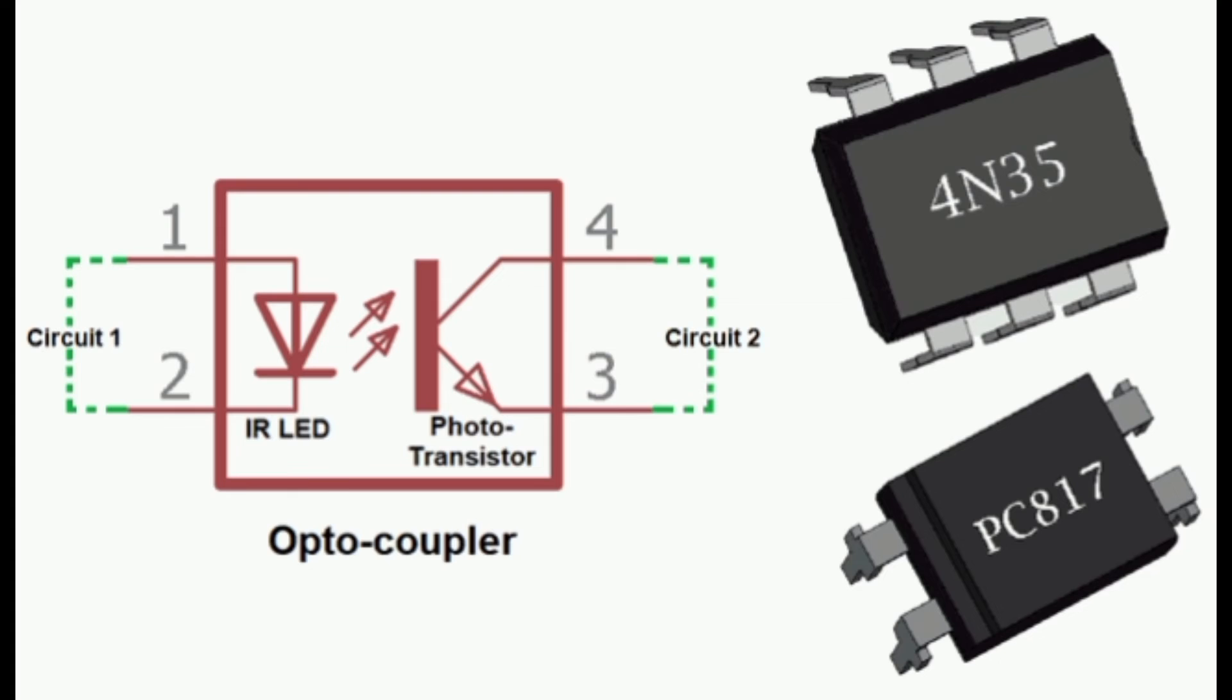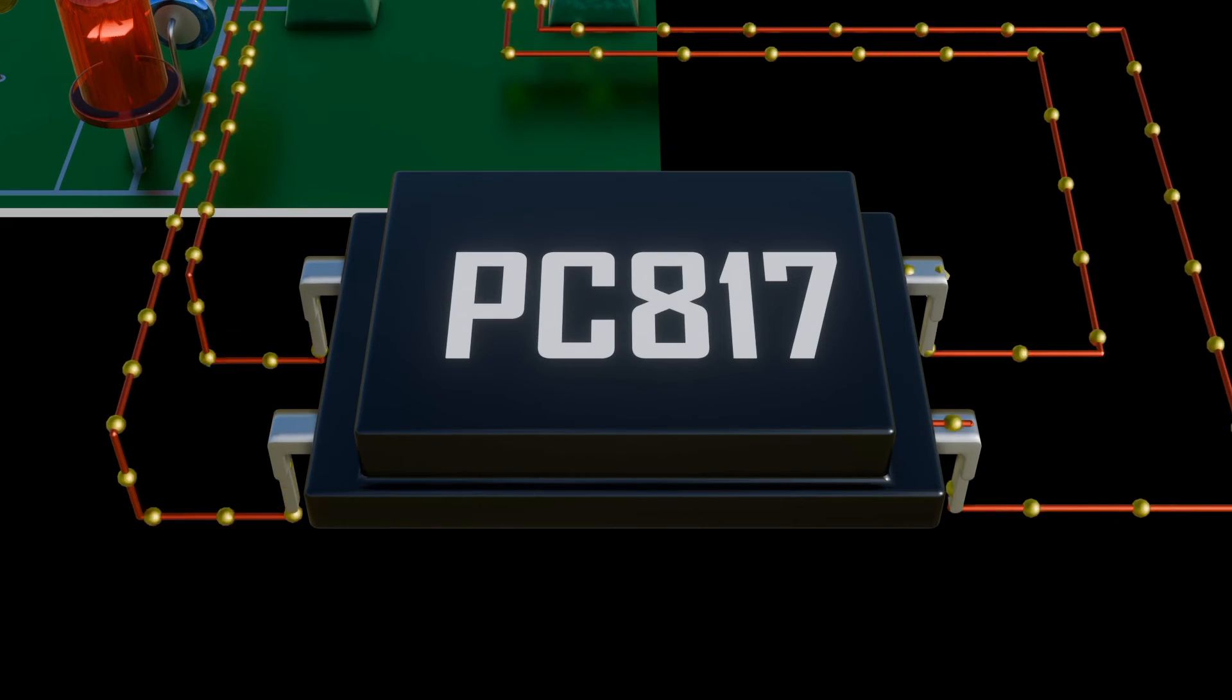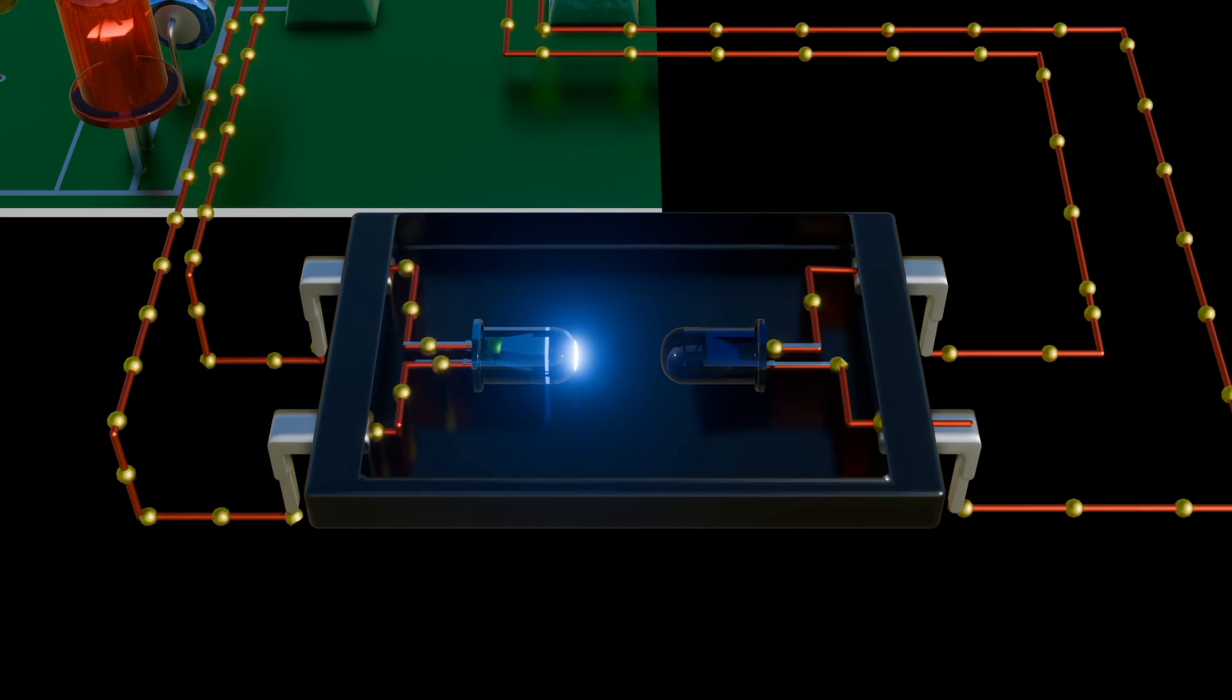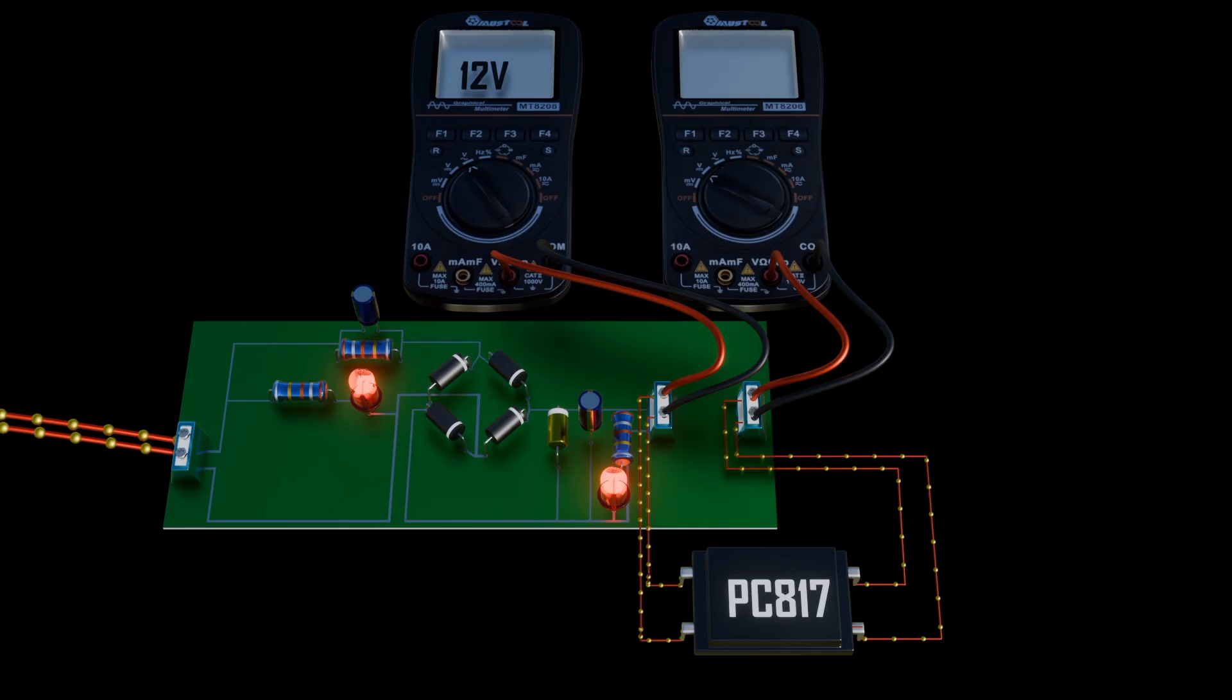Major types of the optocouplers are phototransistor optocouplers, commonly used for general signal isolation and interfacing, photodarlington optocouplers, which provide higher gain and sensitivity. Photodiode optocouplers, used for high-speed signal transmission due to their fast response time. TRIAC and SCR output optocouplers may be used for AC power control applications.